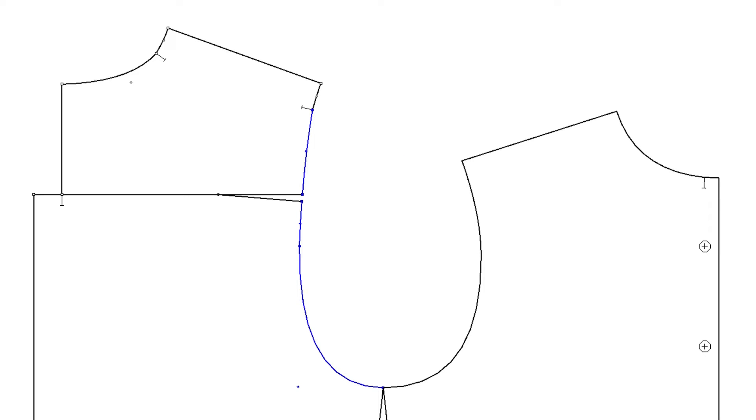So this is the shoulder point. Then you measure the back armhole length up to the shoulder point. And this is the front armhole length, those two. Okay, let's draft the sleeve pattern.